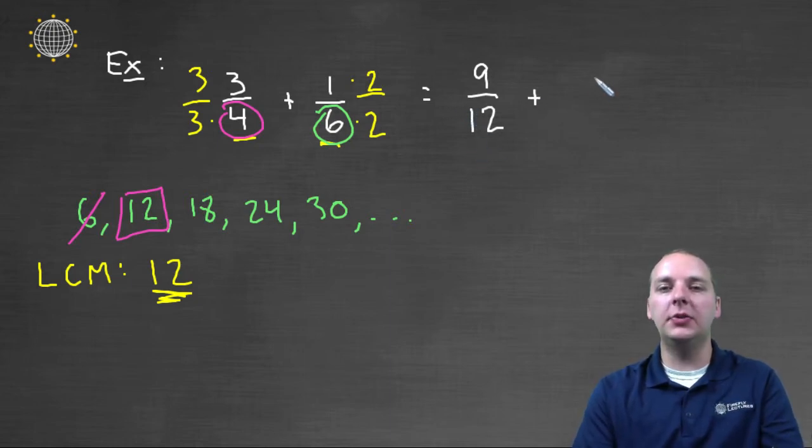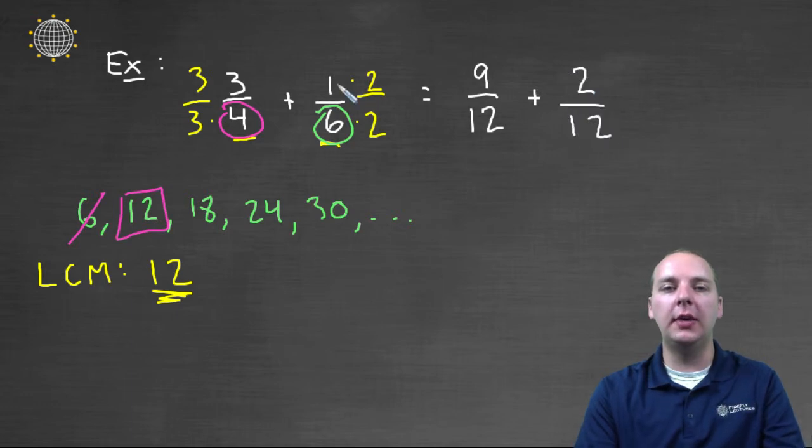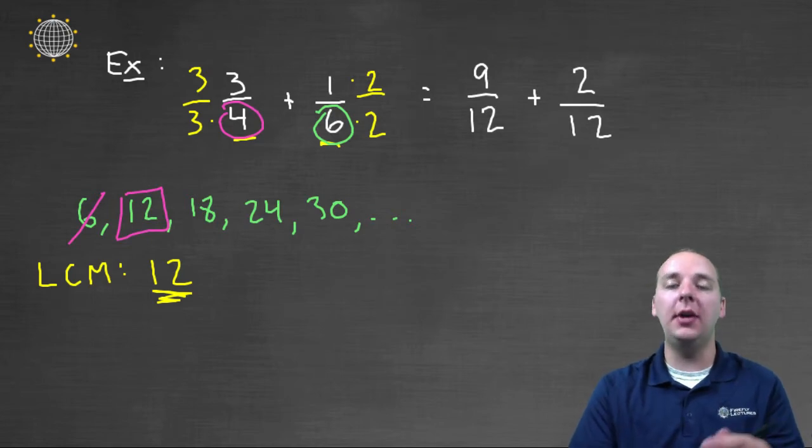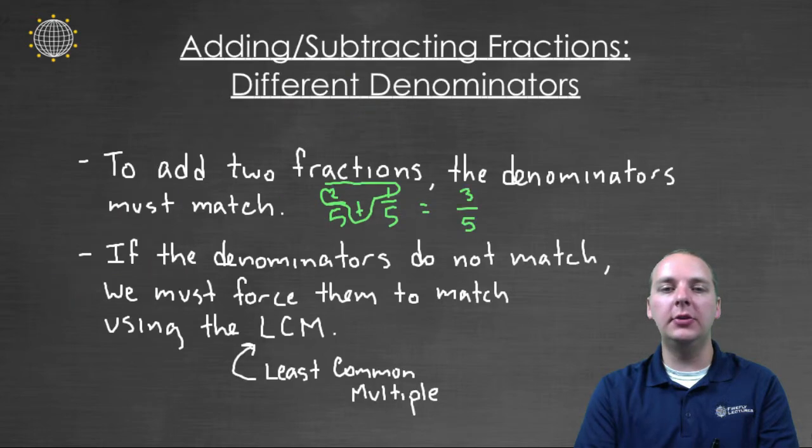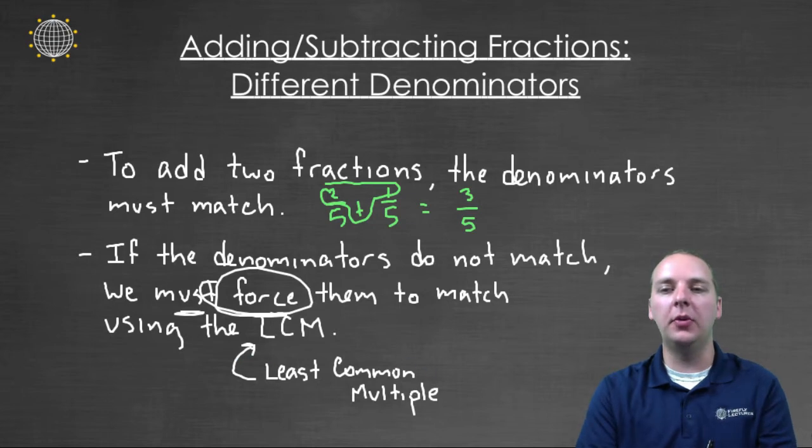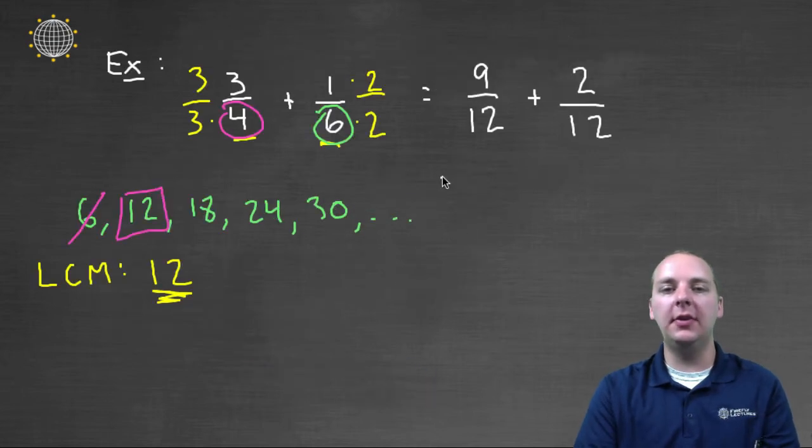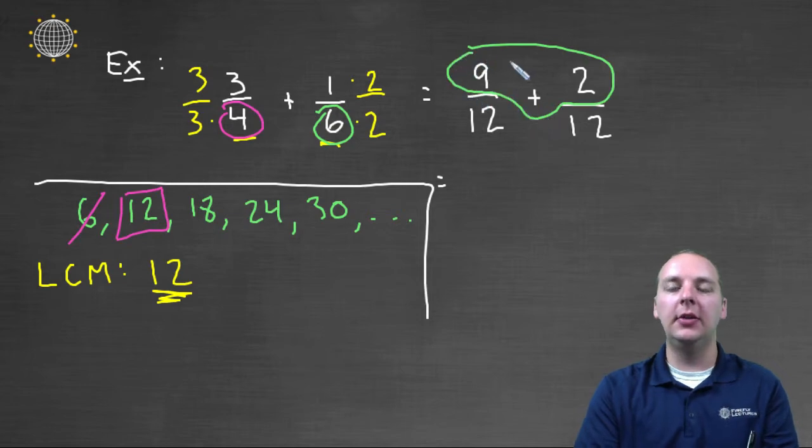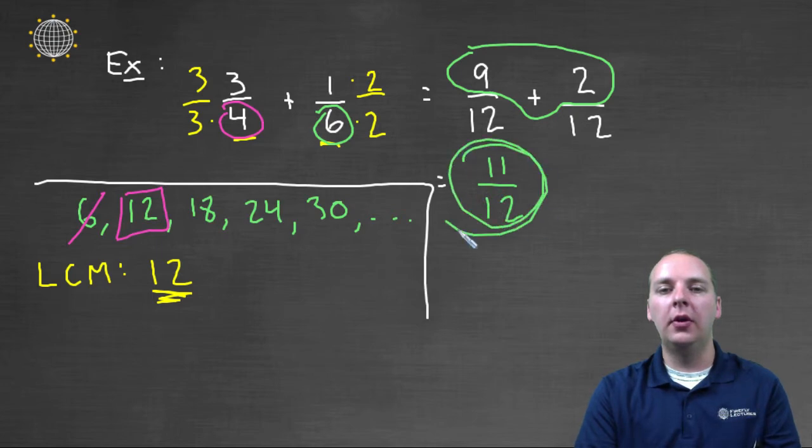And the second fraction will be two over twelve, two times one over two times six. And so two over twelve is the same as one over six, but this has an added bonus. What's the bonus of writing it this way? Well we have the same denominator now, so this is what we do. If the denominators do not match each other, we force them to match using the least common multiple. Once that's done, everything's downhill from there. Nine over twelve plus two over twelve. If the denominators match, the arithmetic happens in the numerator, and so we would get eleven over twelve for our final answer.